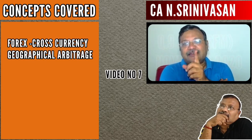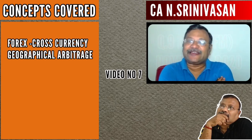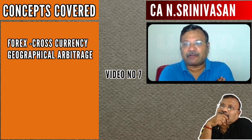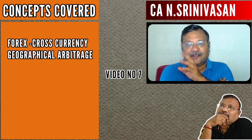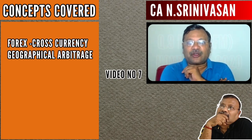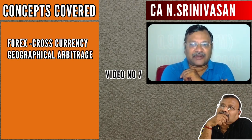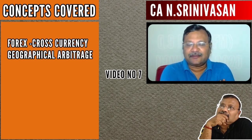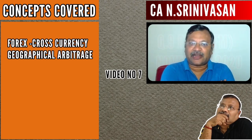Hello everyone. This is the 7th video in the series where I am solving and explaining select problems from RTP relevant for November 2020 exam for the subject of strategic financial management. In this video, we are going to solve question number 9 which comprises of two parts 9a and 9b. 9a deals with cross currency and 9b deals with geographical arbitrage.